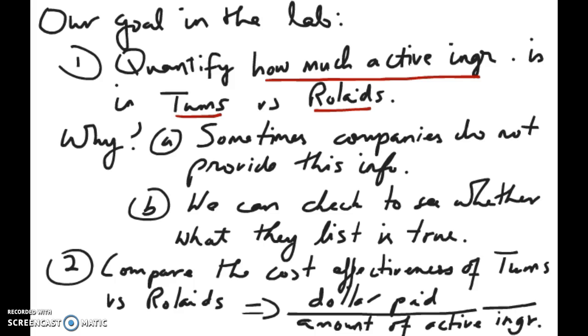You have two goals in this lab. The first goal is just to quantify how much of the active ingredient you actually have in a particular antacid brand. You'll be given a tablet of Tums and tablet of Rolaids and you have to work with them to figure out how much of those weak bases are present in the Tums or the Rolaids.